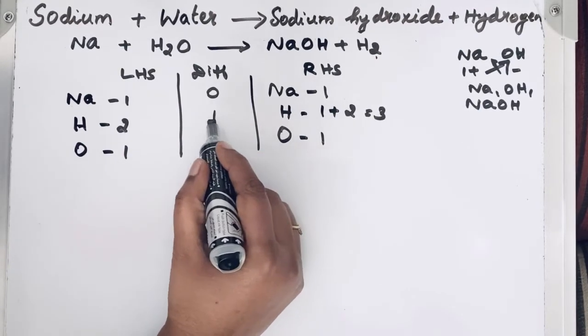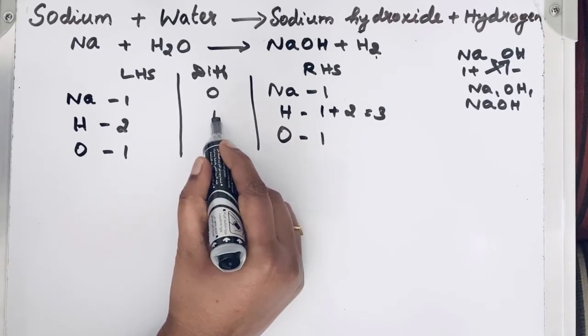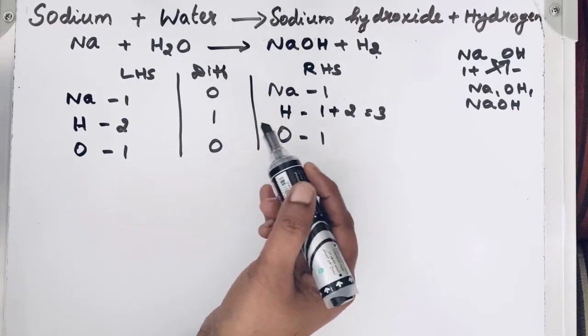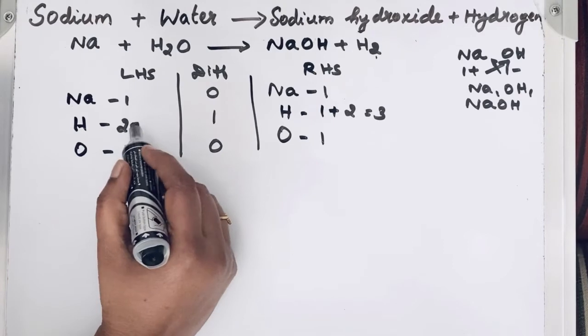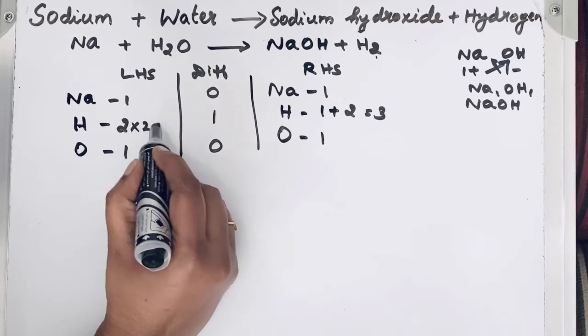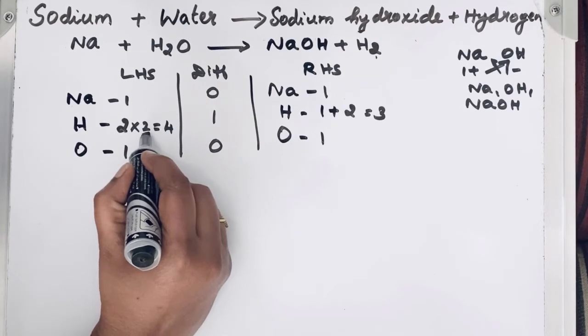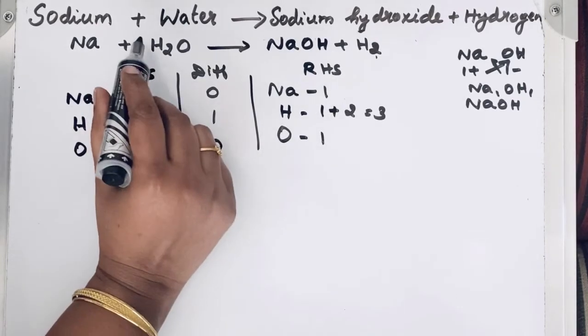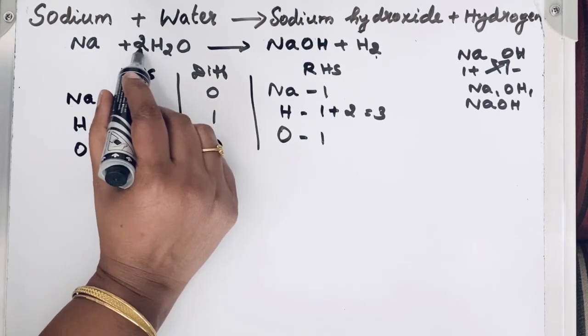So to make this difference column, here 0, we need to change that number of atoms in the left hand side of hydrogen. So we try to multiply with 2 and we will get 4. So this 2, as the coefficient, we are going to change in front of, going to put in front of H2O. So this is called coefficient.